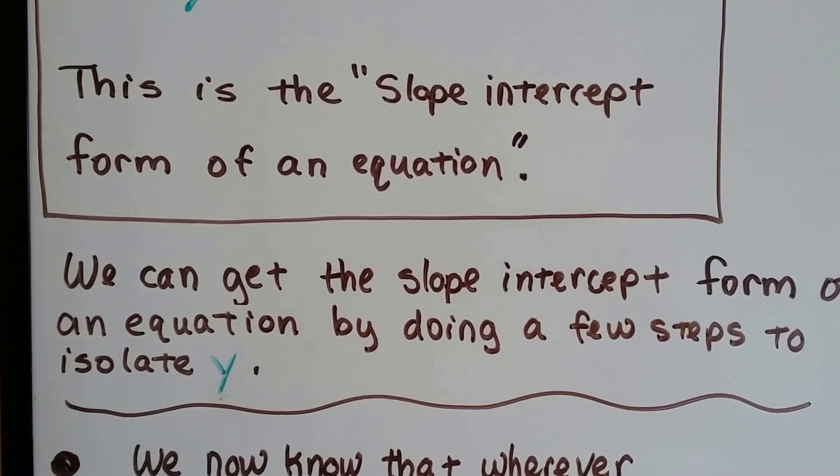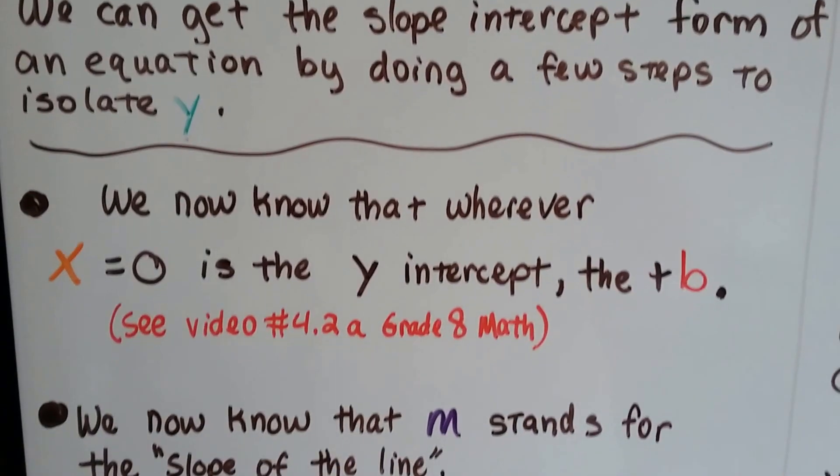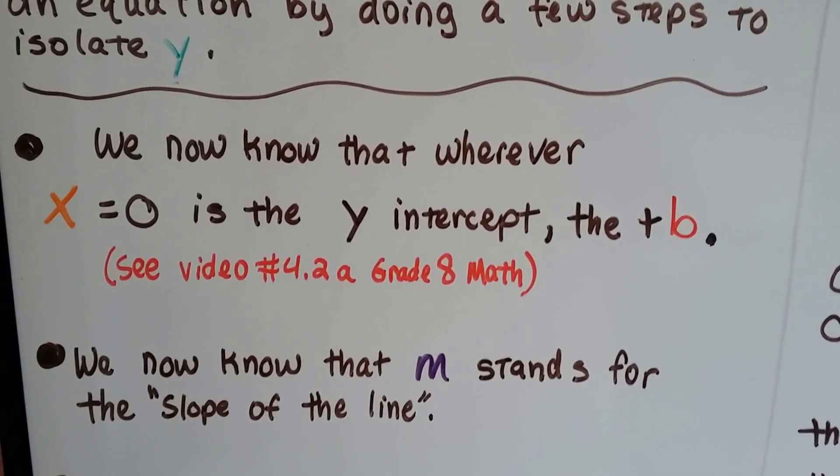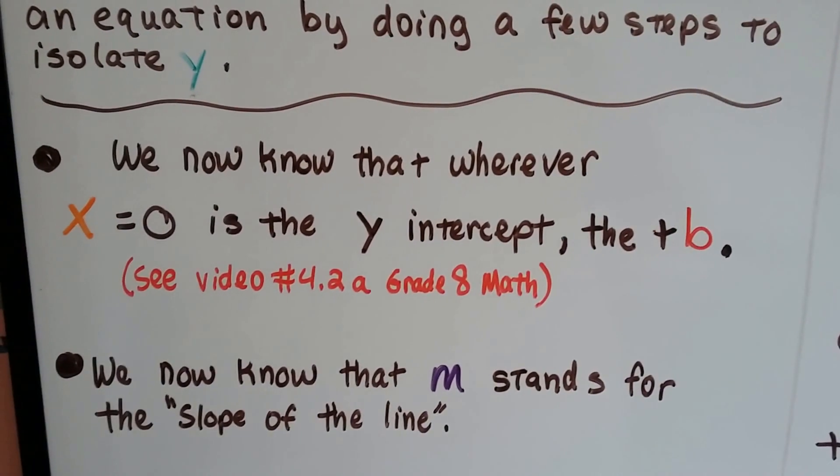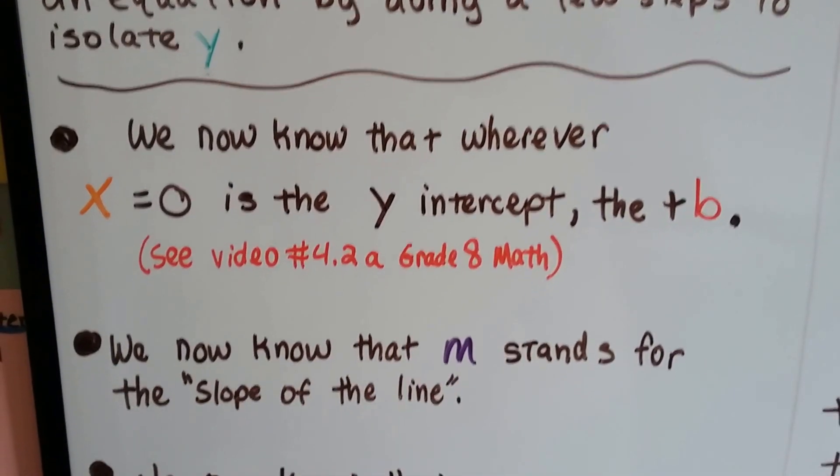We can get the slope-intercept form of an equation by doing a few steps to isolate that y. So we know that wherever x equals 0 is the y-intercept. It's the b. We covered that in video 4.2a in this playlist for Grade 8 Math.